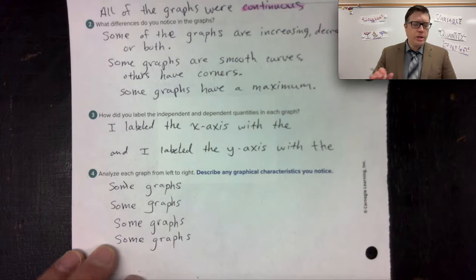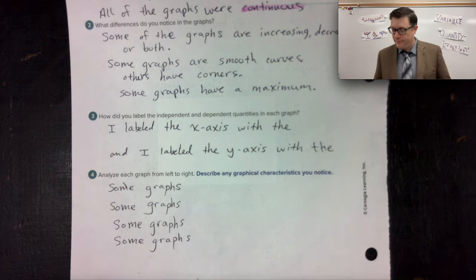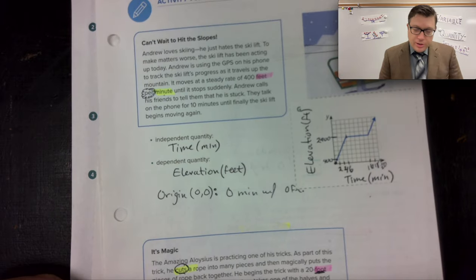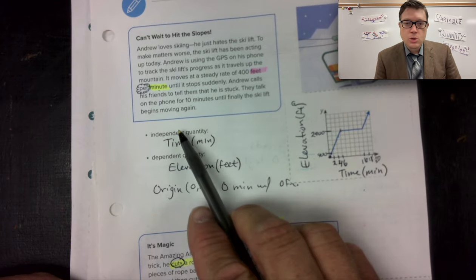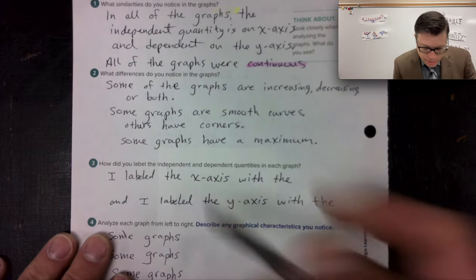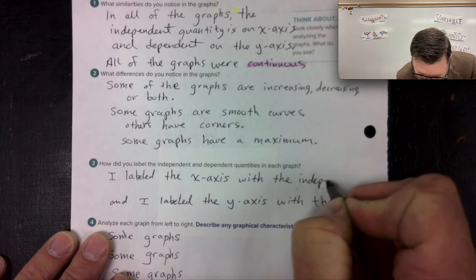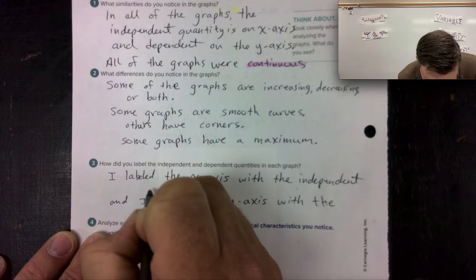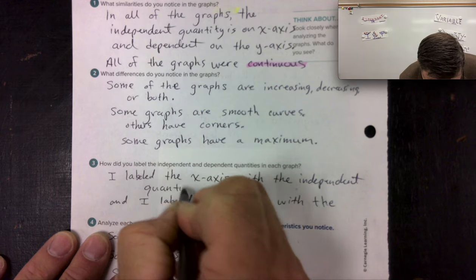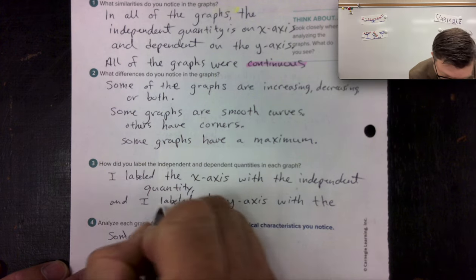Let's try number three. How did you label the independent and dependent quantities in each graph? And honestly, in every single graph, independent quantity went on the X axis, dependent quantity went on the Y axis. So I labeled the X axis with the independent quantity. And I labeled the Y axis with the dependent quantity.